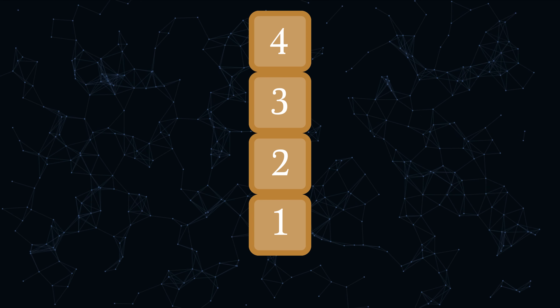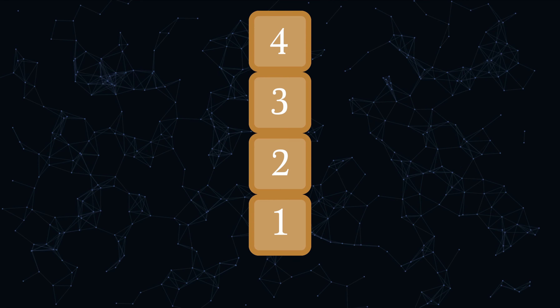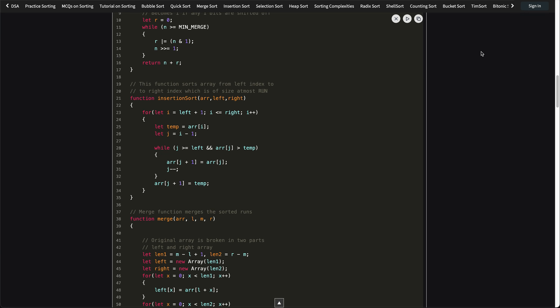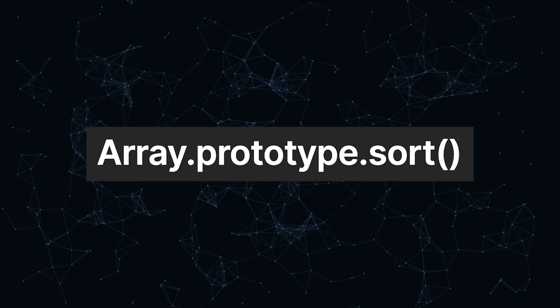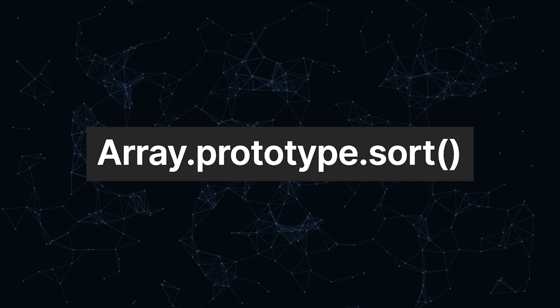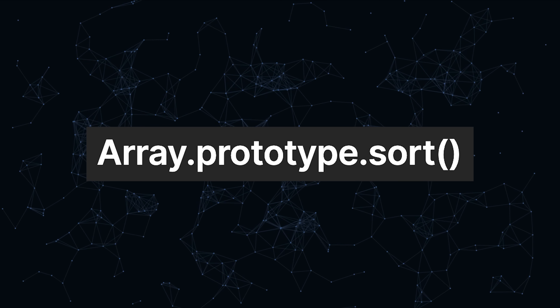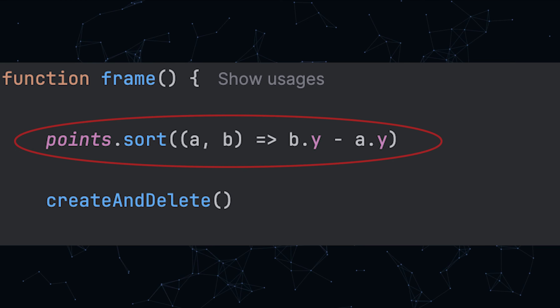I was hesitant to use this at first because I thought it would make the game a lot more laggy, since it has to sort every frame, but it actually didn't. I thought I'd have to implement a sorting algorithm myself, but then I found out that there's just a .sort function built into JavaScript which sorts any list in any way you want. I deleted all my previous code and wrote this one line of code that instantly fixed the bug.